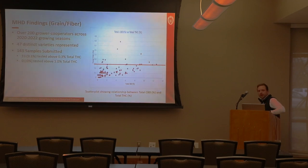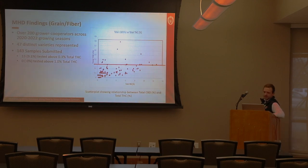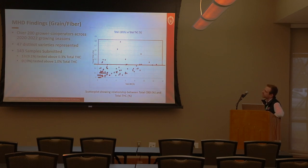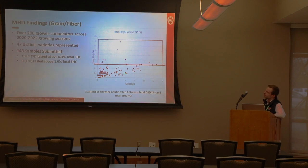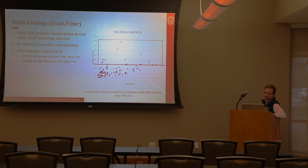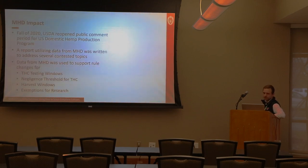Grain and fiber hemp tells a somewhat different story, but still concerning — almost nine percent, or a little over nine percent, of samples submitted over the last few years were non-compliant. The goal is to provide growers the opportunity to pick varieties that perform well agronomically and are also compliant, which is exactly where the database is most important.